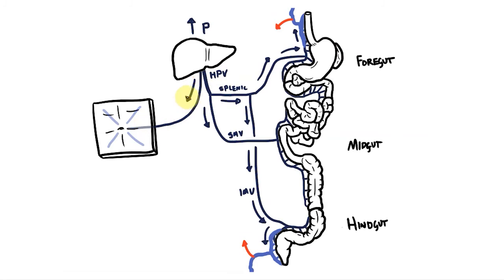Plus, if pressure builds up in the paraumbilical veins, you might also see distended abdominal veins heading out from the umbilicus and looking a bit like a bunch of angry snakes.